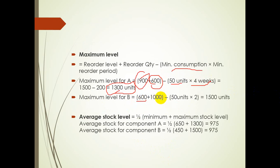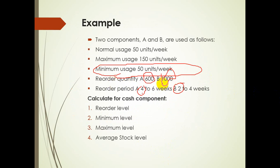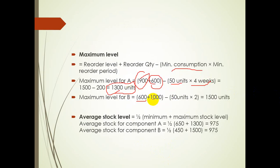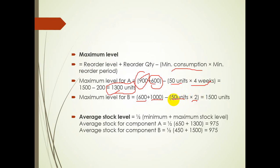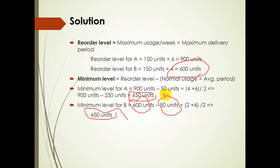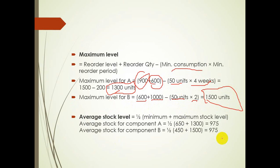For product B: ROL is 600, reorder quantity is 1000, minimum consumption is 50 units, minimum reorder period is 2. So: 600 + 1000 − (50 × 2) = 1600 − 100 = 1500. Maximum level for B is 1500 units. The organization should not keep more than 1500 units of product B.